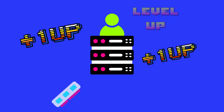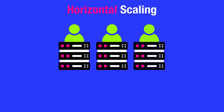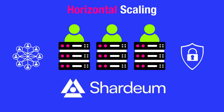requiring more RAM, larger hard drives, and more powerful CPUs — horizontal scaling spreads the workload across multiple nodes to achieve the same goal. Horizontal scaling is crucial in maintaining the decentralization and security of Shardium as it grows.